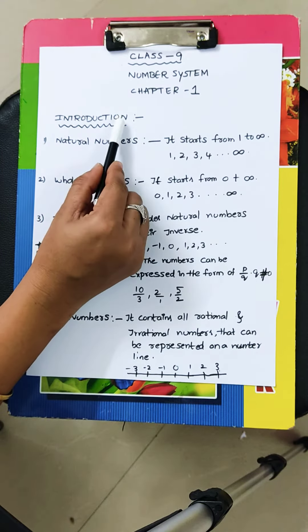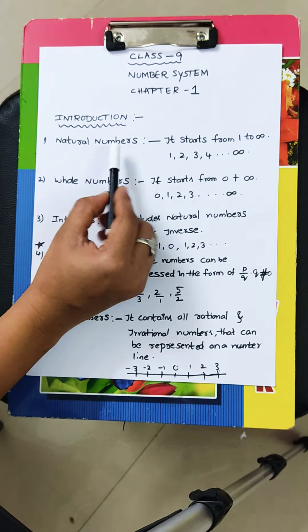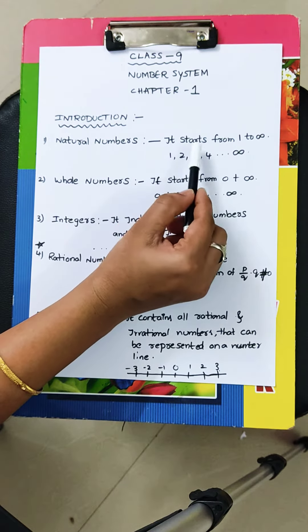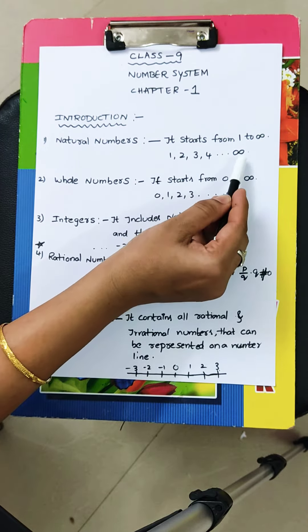First introduction part, number 1, natural numbers. What are the natural numbers? Natural numbers, it starts from 1 to infinitive. I mean 1, 2, 3, 4 and so on, infinitive.